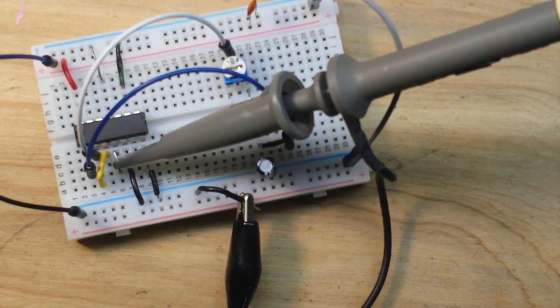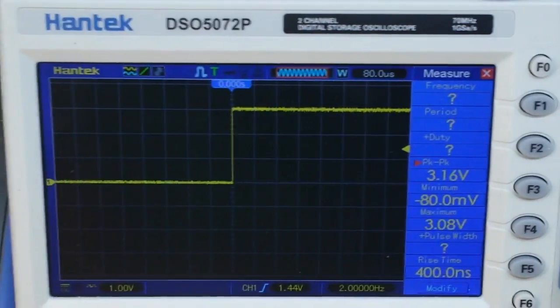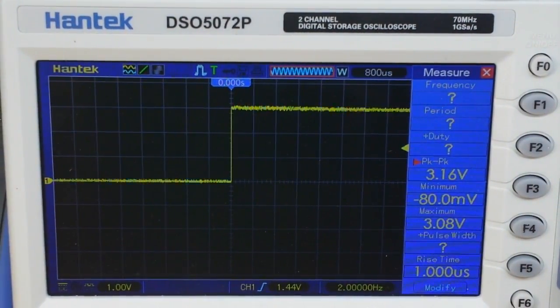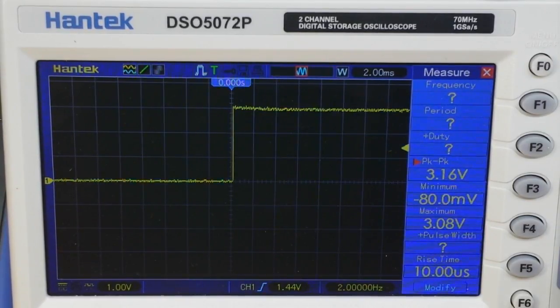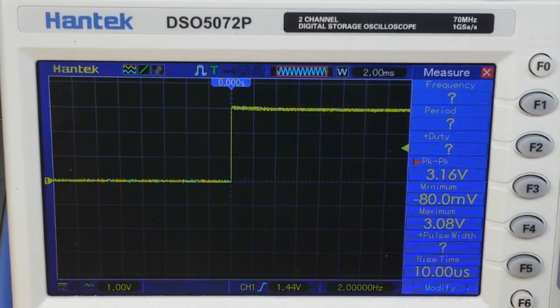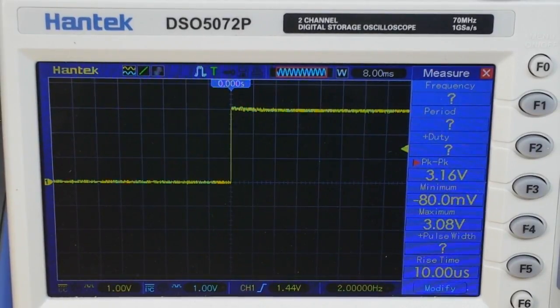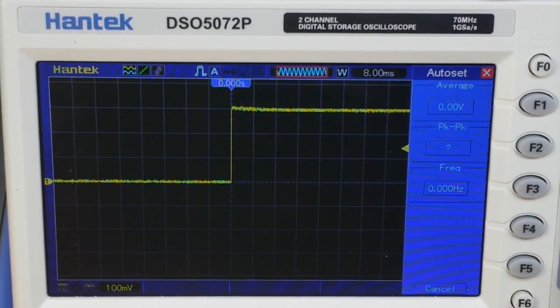Sorry for the jump cut there, I had to cough. Okay I have replaced our one microfarad ceramic with a 10 microfarad electrolytic capacitor, and if we come in now and look at our signal, we are getting two hertz out of it. I just hit the auto set there, two hertz doesn't want to play nice on two hertz.